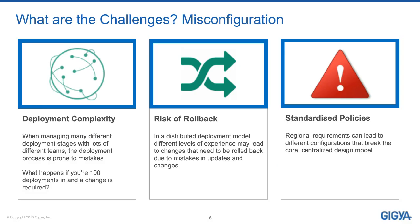Looking at the challenges of global deployments, let's focus on misconfiguration. When you have multiple streams of deployment across different markets and platforms, it becomes complex. You have digital properties being deployed as part of a CIM deployment at different stages — some in development, some in staging, some in production. Managing that scale of hundreds and thousands of websites makes it a real problem to do the right thing at the right time.